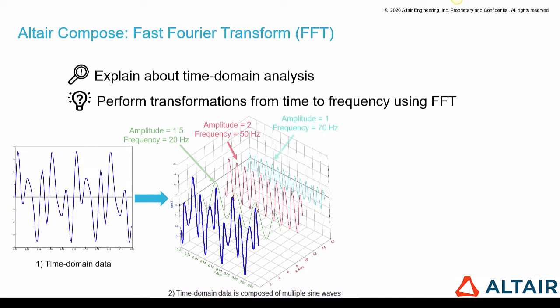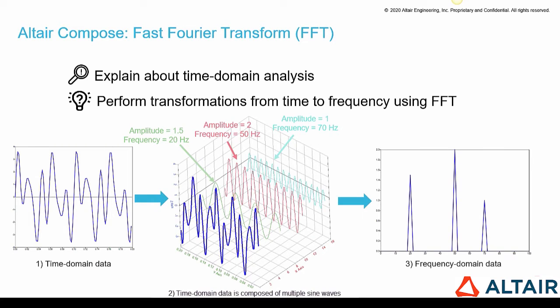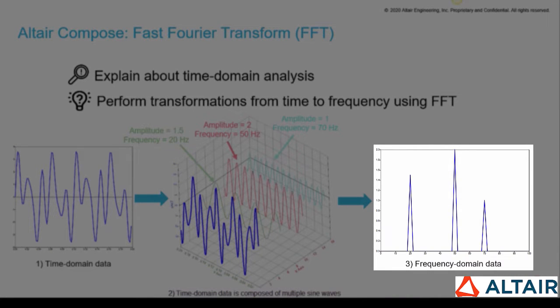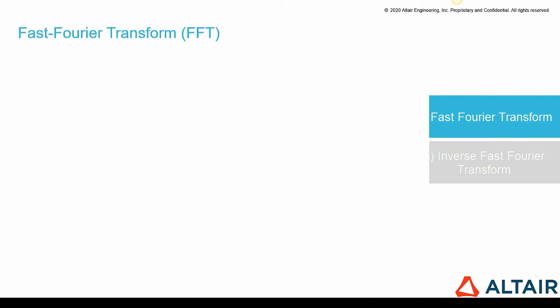And the third one equals to 1 and 70. One of the most popular mathematical techniques to achieve it is fast Fourier transform, an algorithm to decompose the signal to represent it in frequency domain. This image here shows the outcome of FFT function, which is the frequency representation of the time domain signal.